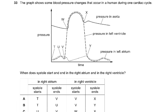Question 33 — again one of those graphs you all don't like at O-level or A-level. The graph shows blood pressure changes that occur in a human during one cardiac cycle. When does systole start and end in the right atrium and in the right ventricle? The pressure shown is in the aorta, so we're talking about the left ventricle pressure and the left atrium pressure.